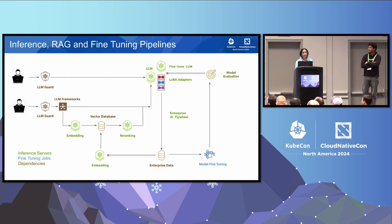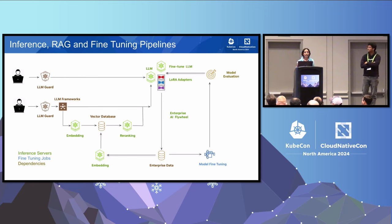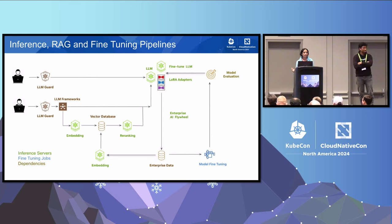For fine-tuning models, you would run a fine-tuning job, evaluate it, and if it is good enough, generate LoRA adapters and start serving. When we look at these pipelines, there are inference servers such as embedding, re-ranking, and large language models, as well as fine-tuning jobs in blue and dependencies — well-known microservices such as vector databases, guardrails, and evaluators. We are going to focus more on inference servers and fine-tuning jobs in this presentation.